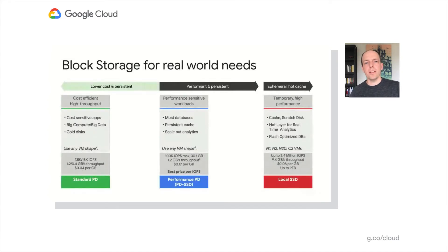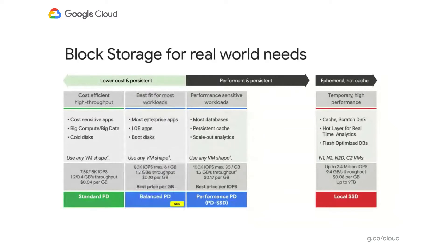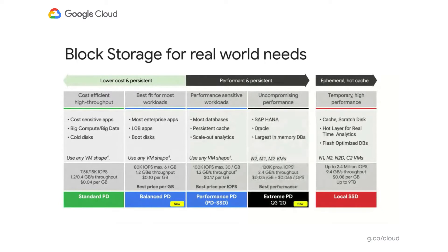This year, we're expanding our persistent disk product portfolio with two new disk types. Balanced PD is our general purpose disk, best suited for enterprise applications. And for the highest performance workloads such as SAP HANA and other high-end in-memory databases, we're introducing Extreme PD. At the same time, all of our existing disk types are seeing substantial increases in performance this year.